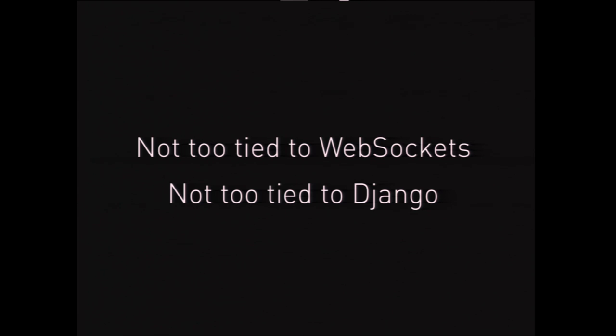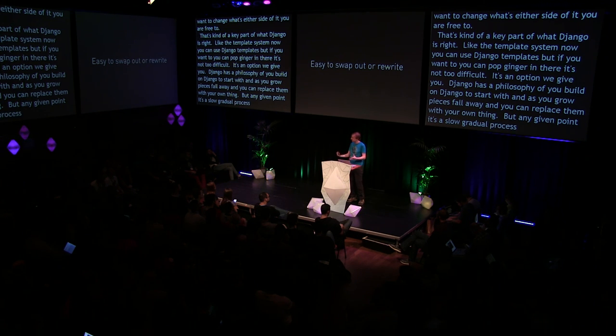The second part of loose coupling is the idea that you can swap out components — there's a well-defined minimal interface you can program against, and if you want to change what's on either side of it, you're free to. That's a key part of what Django is. The template system, for example — you can use Django templates, but you can also pop Jinja2 in there. Django has a philosophy of: you build on Django to start with, and as you grow, pieces fall away and you can replace them with your own thing. Django is modular — you can pick and choose what you want.